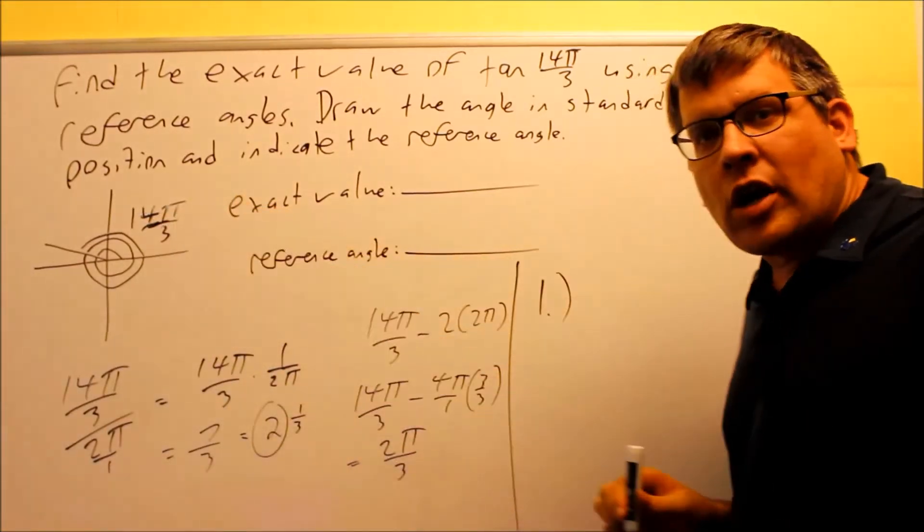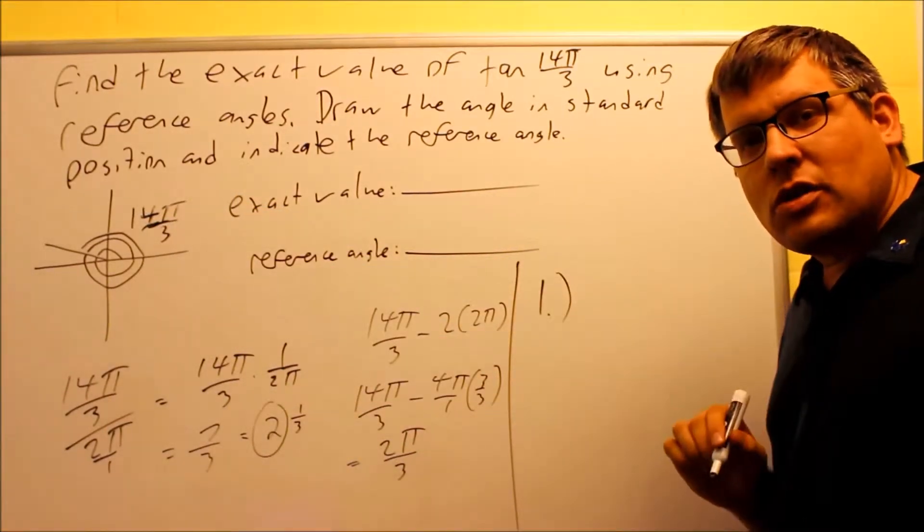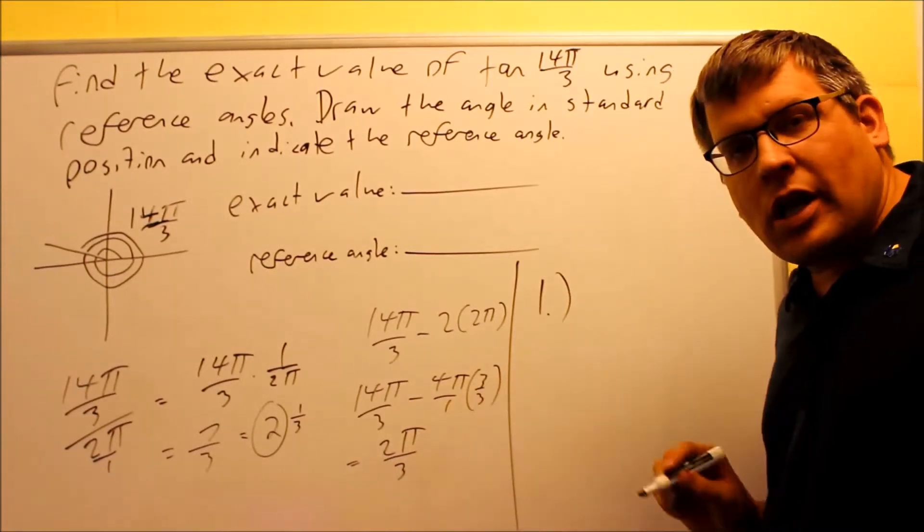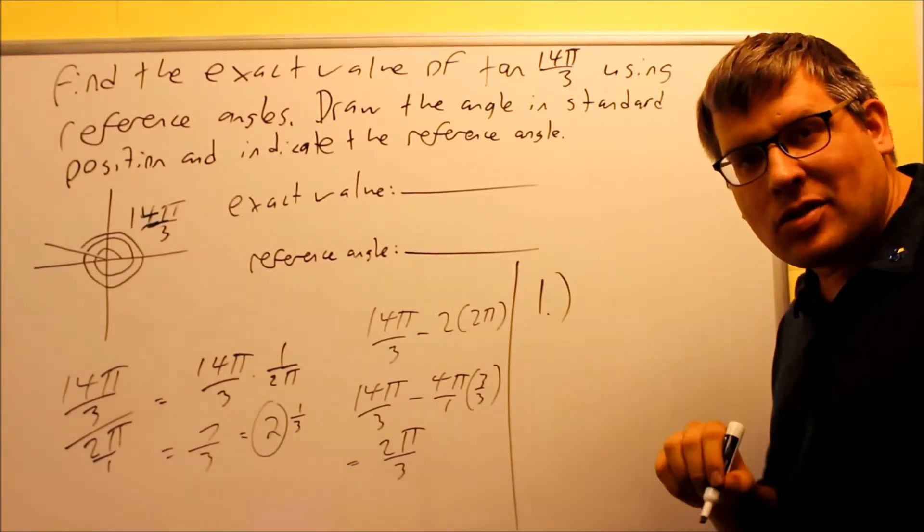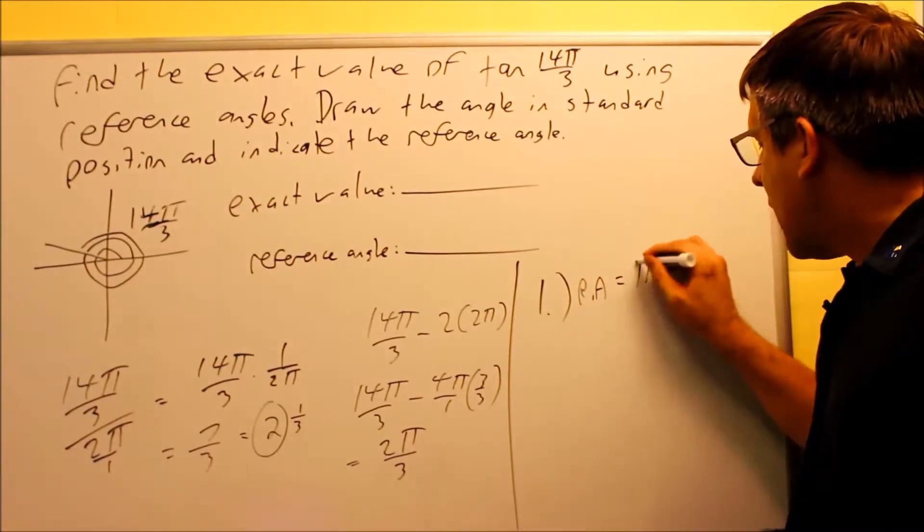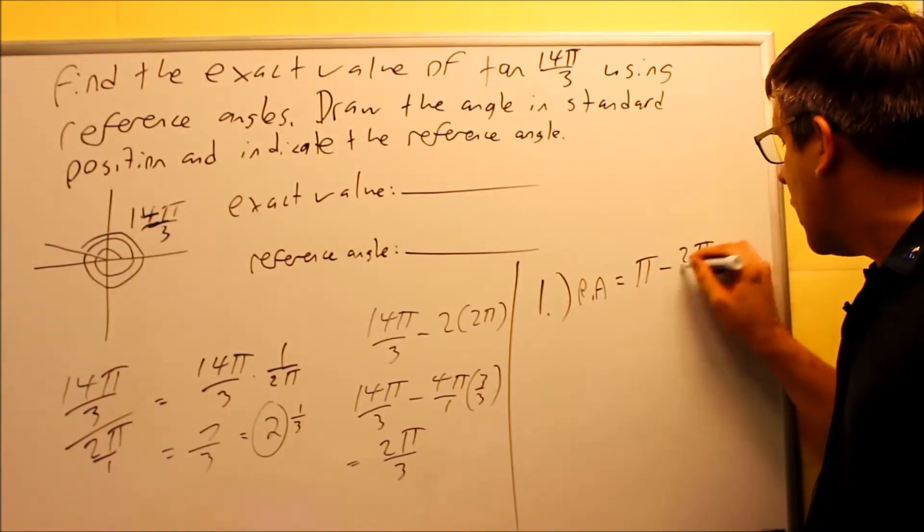If you're in the second quadrant, the formula for radians is going to be π minus the angle that you have. So it's always π minus θ. So, my reference angle is going to be π minus 2π over 3.